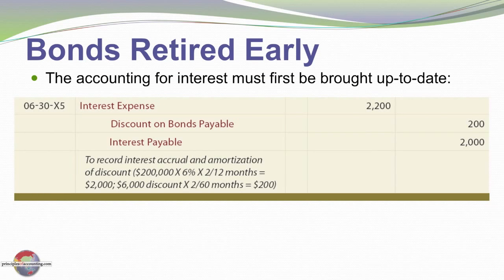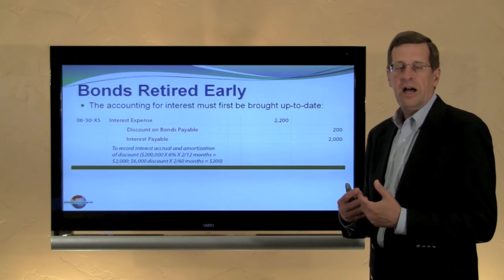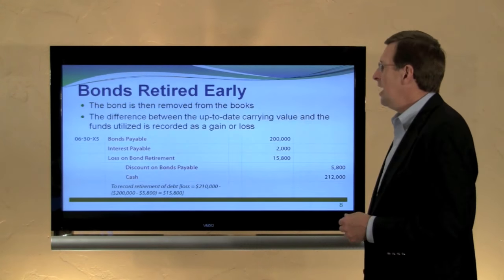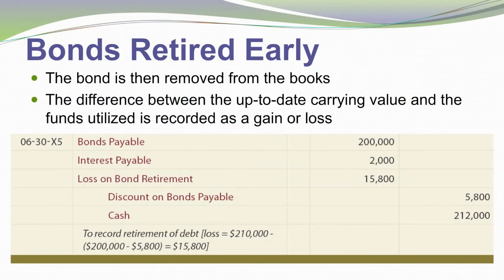Let's look at the journal entry. First, we need to bring the accounting for interest up to date. We debit interest expense $2,200, credit interest payable $2,000 — that's two months of interest at $1,000 a month — and credit discount on bonds payable $200 to amortize two months of discount. There was $6,000 total discount over 60 months, or $100 a month. Then we remove the bonds from the books: debit bonds payable $200,000 and credit discount on bonds payable $5,800, while crediting cash $212,000 — the $210,000 call price plus $2,000 accrued interest — and debiting interest payable $2,000.